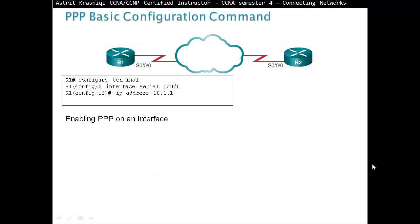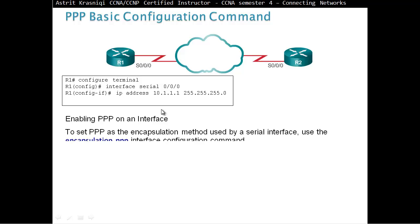PPP Basic Configuration Command. To enable the Point-to-Point Protocol — remember HDLC is our default — we have to access the interface, so the serial interface, give it an IP address, and then enable the Point-to-Point Protocol. Set the PPP as the encapsulation method used by the serial interface.